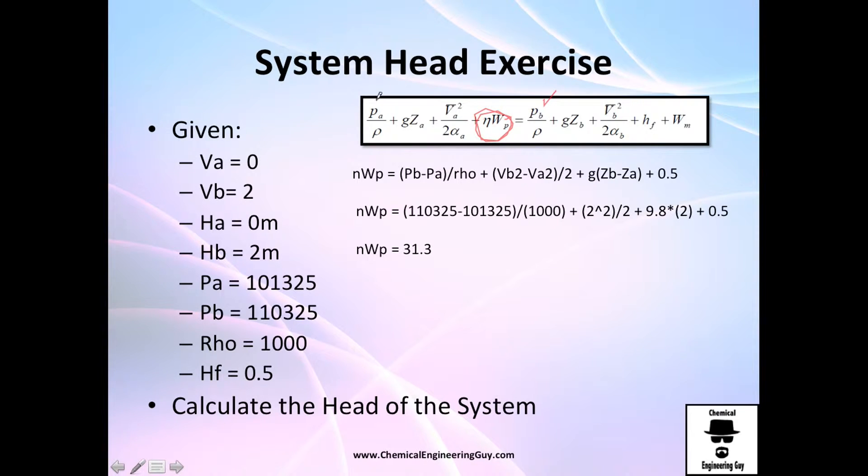So we got the pressure, yes. Density, yes. Gravity is a constant. The height on A and B, yes. The velocity of A is given, yes, actually zero. The velocity in two is given. The energy loss is given.